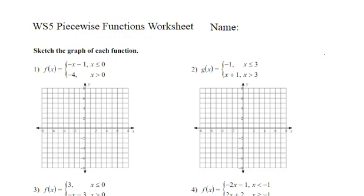On number one, we need to graph y equals x minus one. That's a negative x minus one. So that will have a y-intercept of negative one and a slope of negative one.